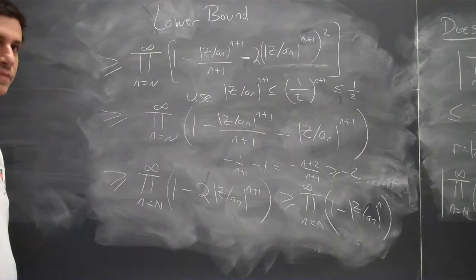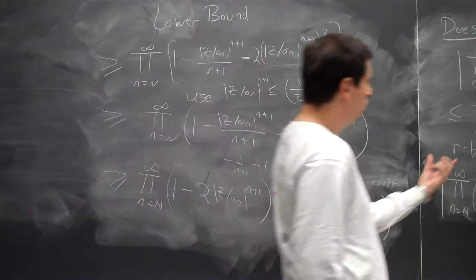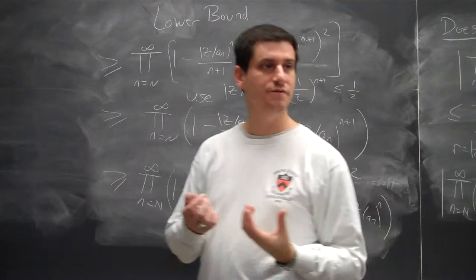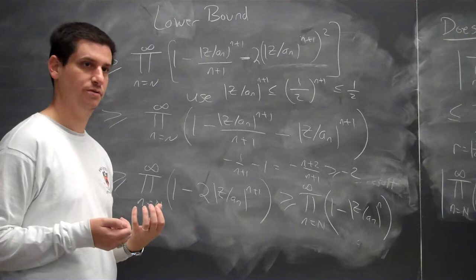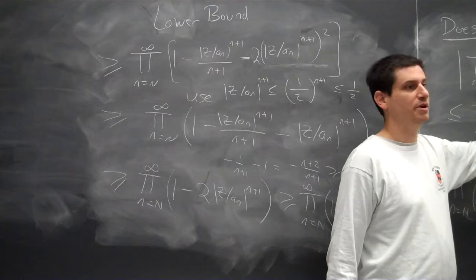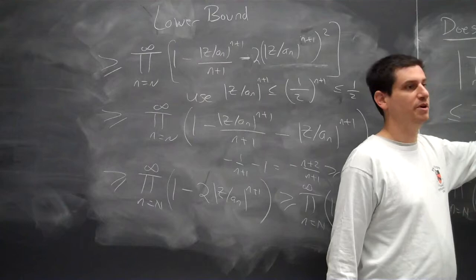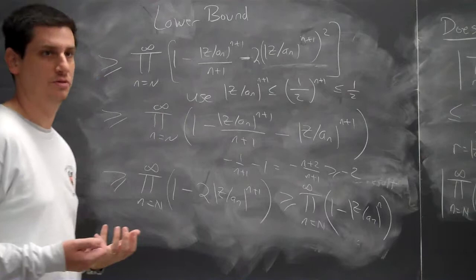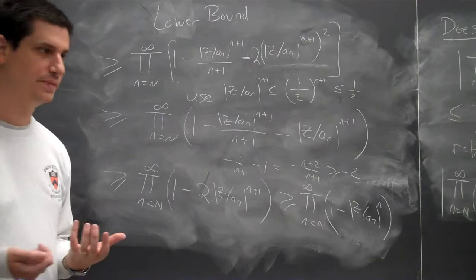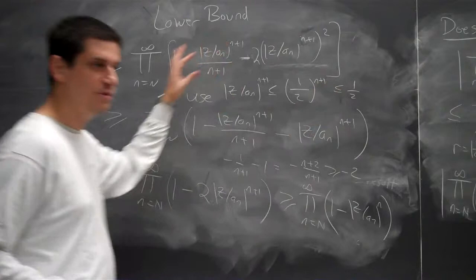Student question: Why were we trying to show this product converges? What problem were we solving? We're trying to solve: given a sequence of prescribed zero locations, can I build a function that's zero there and nowhere else? We wanted to show the product is finite and not identically zero. The first attempt with z - a_n blew up, so we looked at 1 - z/a_n, which has much better properties.